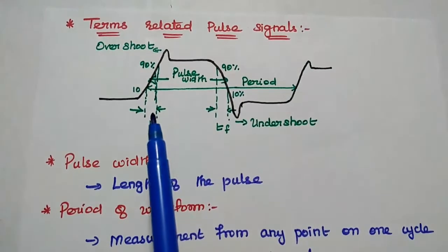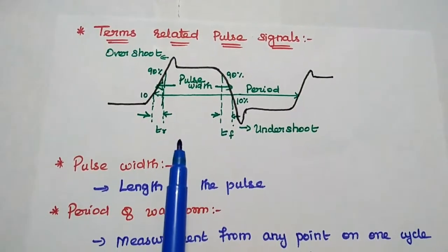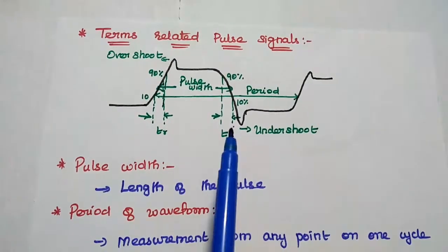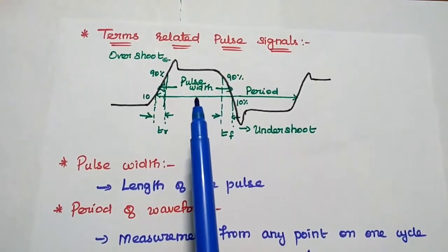Next we are going to discuss the terms related with pulse signals. For that we can consider the practical pulse signal. First one is pulse width. It represents the length of the pulse.